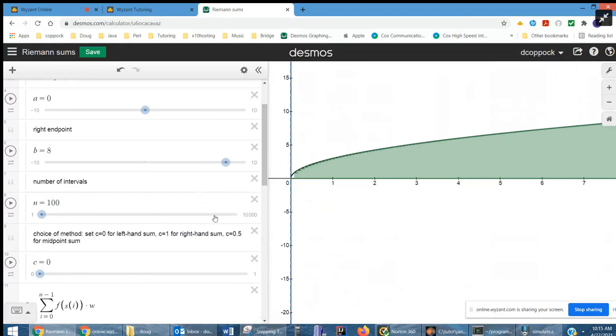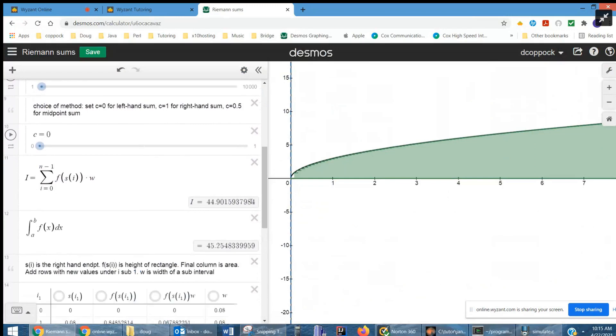Now, you can't hardly see the little rectangles, but there they are. All right. This is left-hand endpoints. I want to go to right-hand. By the way, there's the comparison. I go to right-hand endpoints. Really close. Midpoint rule. Even closer. Okay, so midpoint gives a better approximation than either right or left.